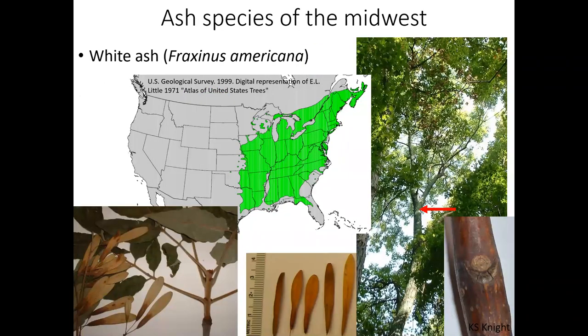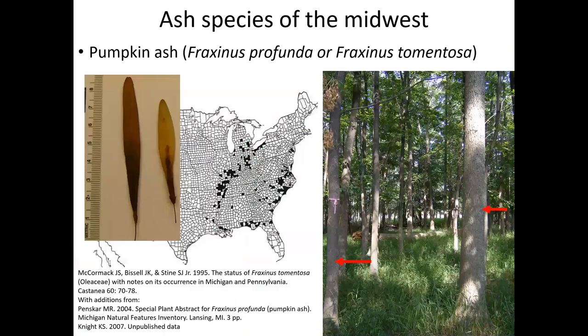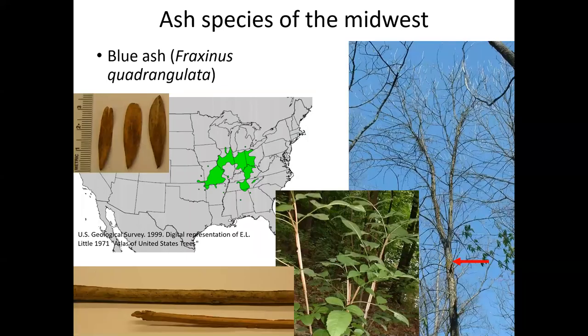White ash also has a very large range. This is typical of upland forests where it often occurs mixed with a number of other tree species. Pumpkin ash is a more southerly distributed species that inhabits wetter areas — swamps and riparian areas. And finally, blue ash has a very small range. This is a species that prefers high calcium soils like those near limestone cliffs in some of the riparian areas of Ohio.